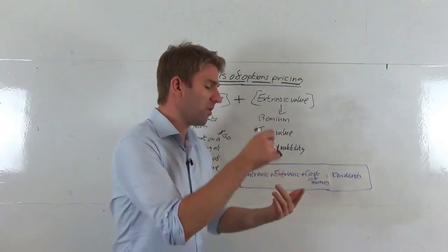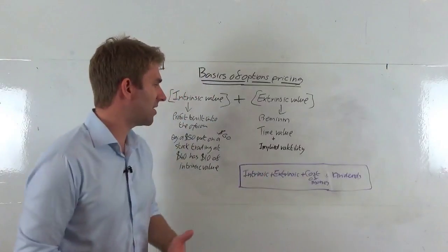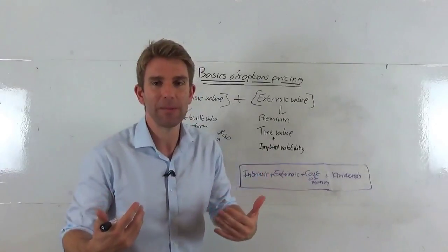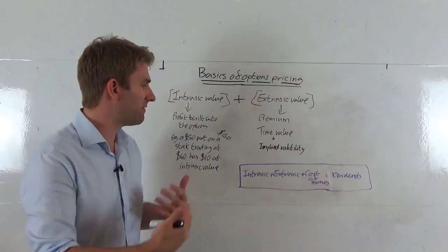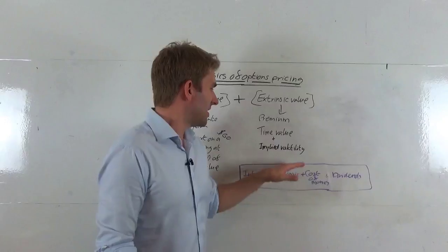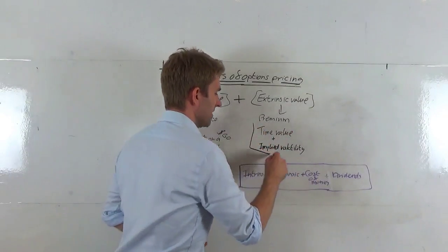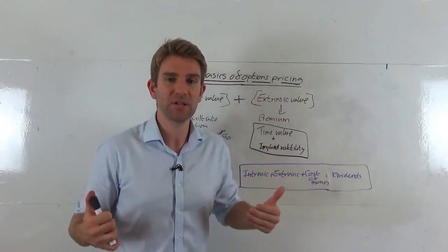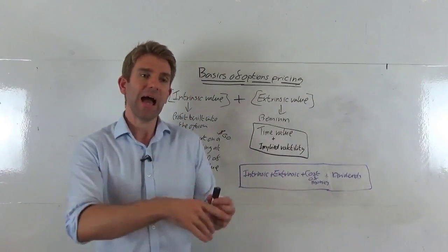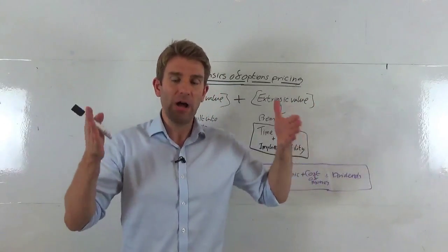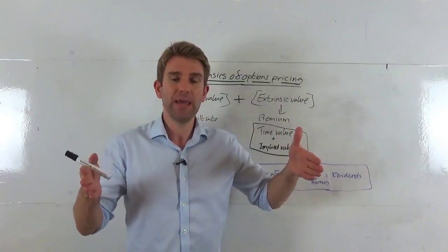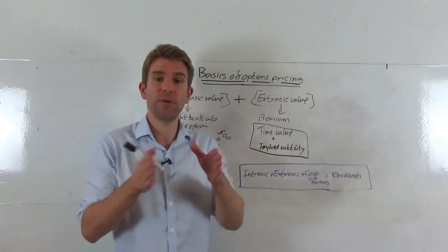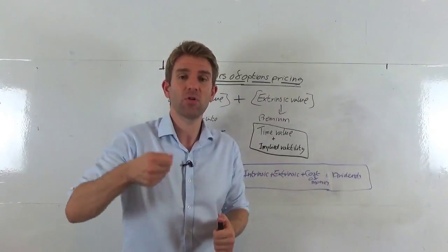The extrinsic value of the option, otherwise known as the premium or the time value, is really where the kind of fun and games come in, because there's a lot of things that go into valuing this. We're looking at really these two things here: it's basically the time to expiry plus the implied volatility. In other words, how long have we got on this strike, on this put option, on this call option? If we only have a very small window of time, then that value is going to be low. That part of it, the time value, is going to be low, right, because the chance of a stock doing something in a short window is much, much, much lower than it is in a large window.